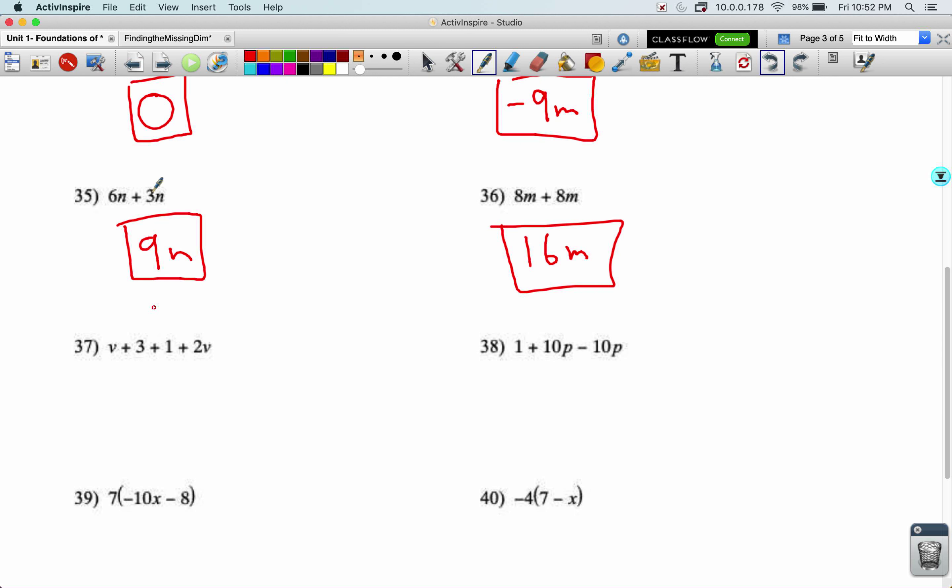Now 37, we have constants and terms of the variable. So the V and the two V could come together to become a three V. The three and the one can come together to become a four, but then we have to stop because these are not like terms. So we just box our answer and we move on.